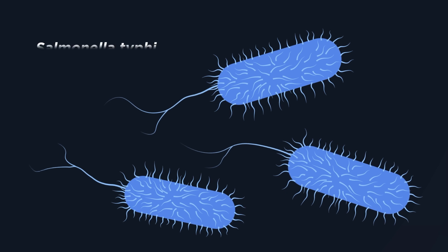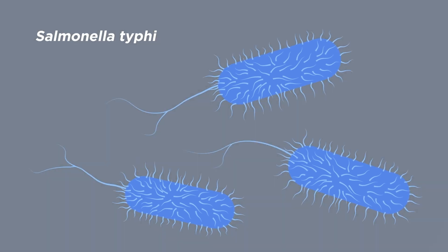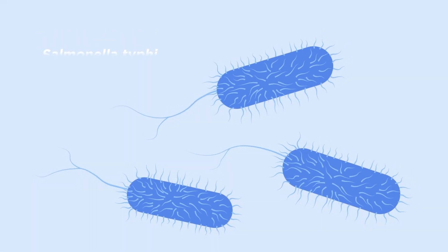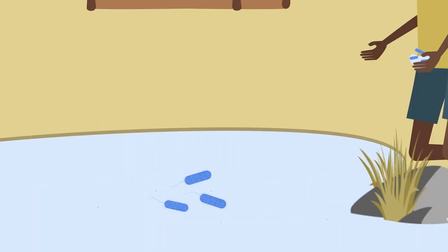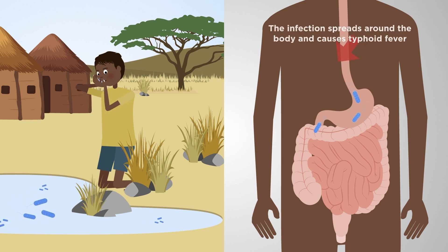Typhoid is caused by a bacterium called Salmonella typhi, which contaminates drinking water and enters the body via the intestines, spreading throughout.